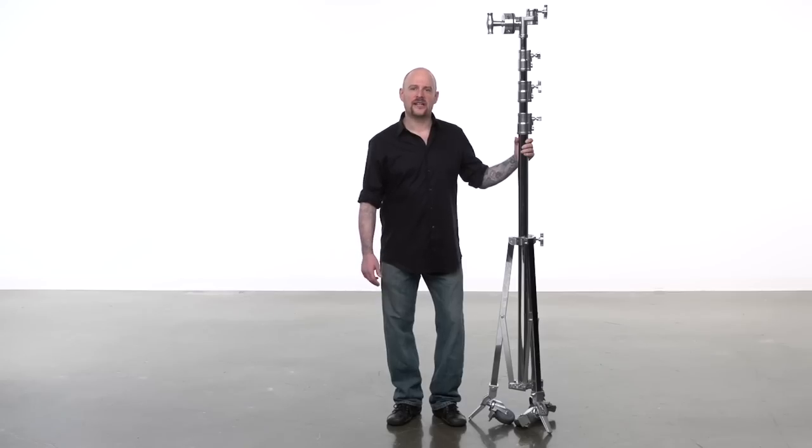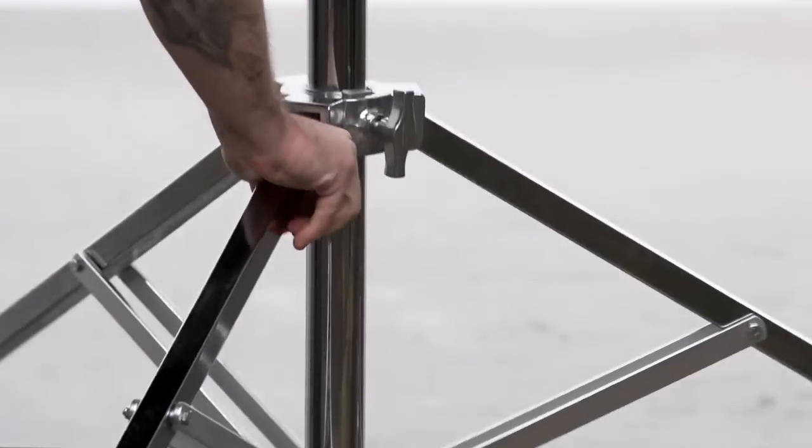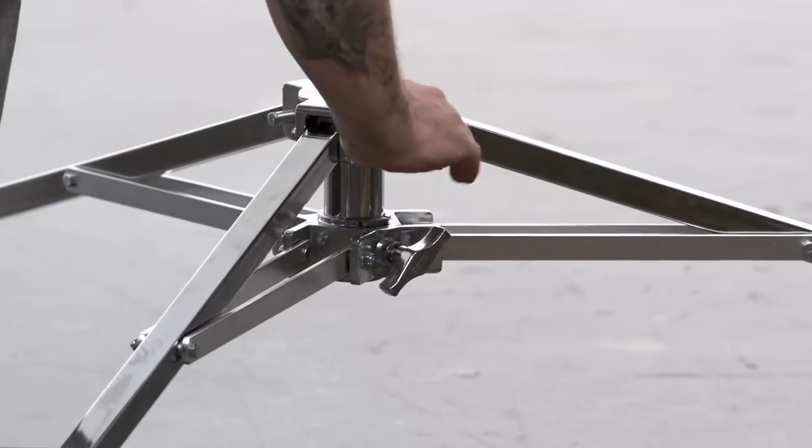To open a stand, turn the knob located at the top casting where the legs meet the stand. Grab two legs and pull apart until the leg braces are parallel to the floor.